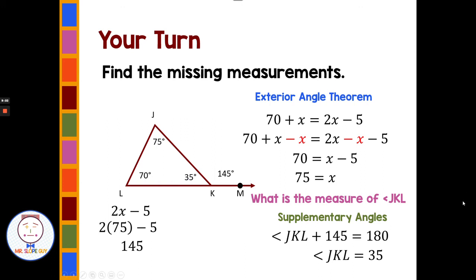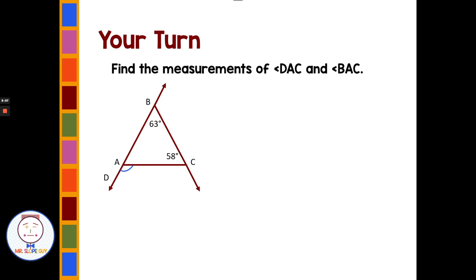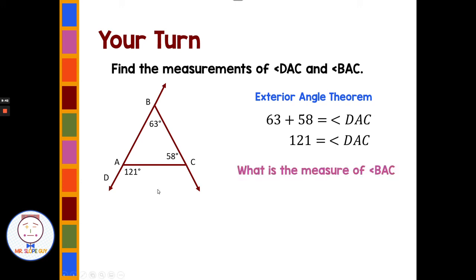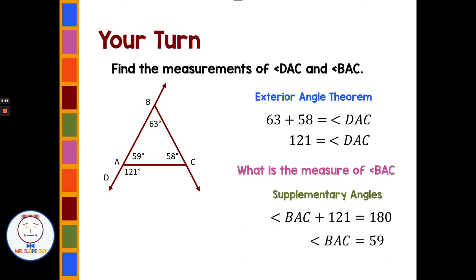Let's try one more: find the measures of angle DAC and angle BAC. Using the exterior angle theorem, the two remote interior angles — 63 plus 58 — add up to angle DAC. So 63 plus 58 gives angle DAC equals 121 degrees. Then for angle BAC, using supplementary angles: 121 plus BAC equals 180, so BAC is 59 degrees. We could also use the interior angles of a triangle adding up to 180 — either way, angle BAC is 59.